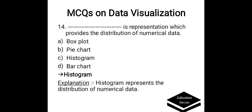Which is a representation that provides the distribution of numerical data? Options are: A. Box plot, B. Pie chart, C. Histogram, D. Bar chart. Correct answer is Histogram. Histogram represents the distribution of numerical data.